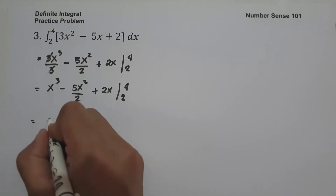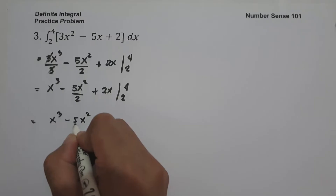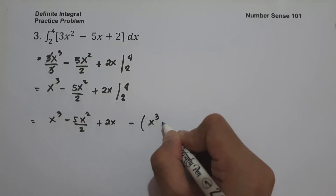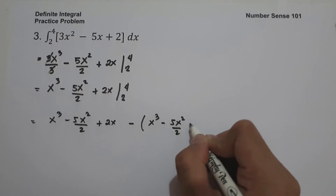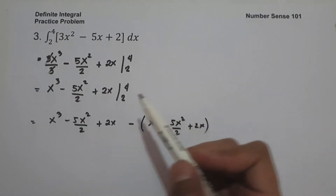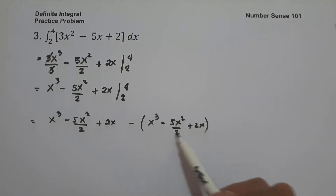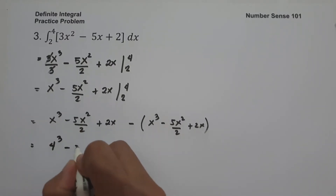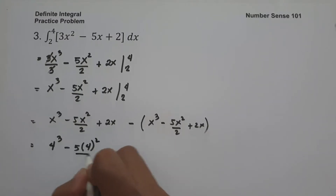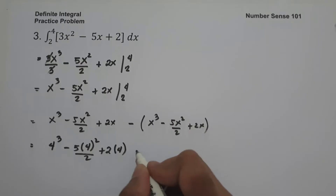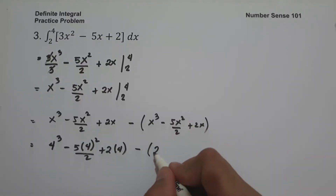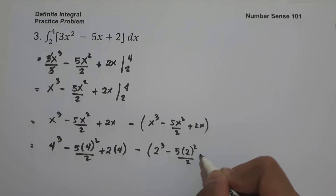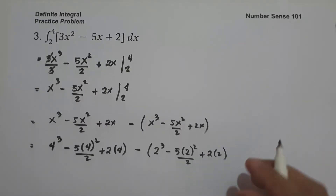We substitute the limits. For x equals 4: 4 cubed minus 5 times 4 squared over 2 plus 2 times 4. Minus the quantity for x equals 2: 2 cubed minus 5 times 2 squared over 2 plus 2 times 2.